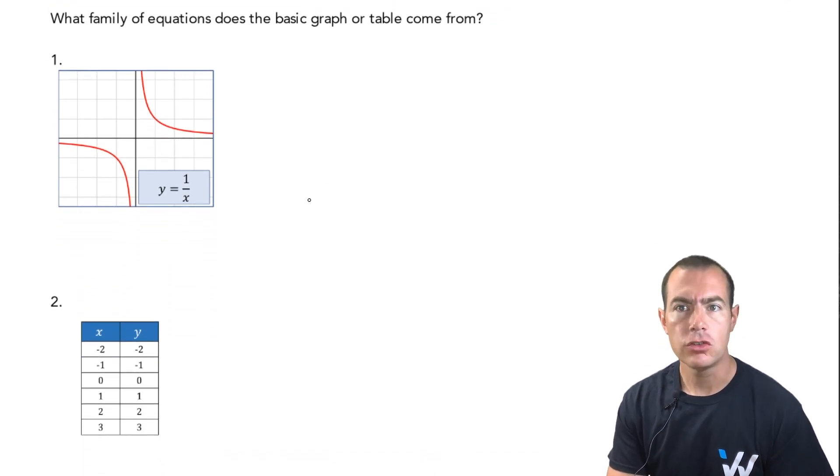In looking at the shape of this particular graph, we see that it has two really big arms that get really close to the x and the y axis. We're also given its equation down here in the corner, y equals 1 divided by x, which is a dead giveaway that this comes from the reciprocal family.